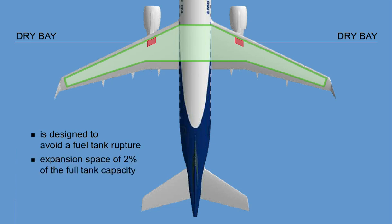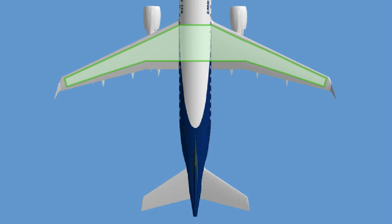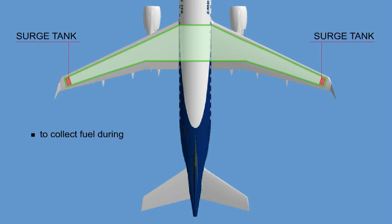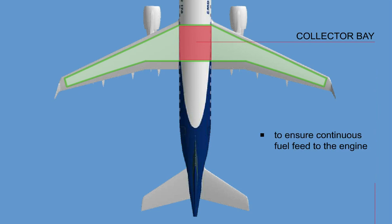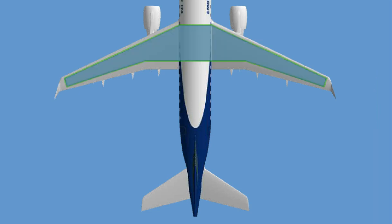An expansion space of 2% of the full tank capacity is provided. Each wing contains a surge tank to collect fuel during wing-down or uncoordinated maneuvers, and a collector bay to ensure continuous fuel feed to the engine throughout the whole flight envelope. The arrangement of the tanks permits the fuel to flow from the outer tank area to the wing root and into the collector bay.